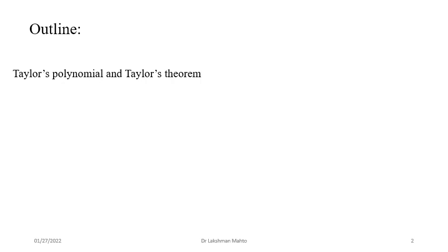We try to approximate that function with the help of a Taylor polynomial of degree n. In this process, we encounter Taylor's theorem. Simply put, if a function is smooth enough — differentiable up to nth order — we can always split that function into two forms: the Taylor polynomial, denoted Tₙ(x), which is a locally defined polynomial, plus a remainder term Rₙ, which is also a function of the approximation.